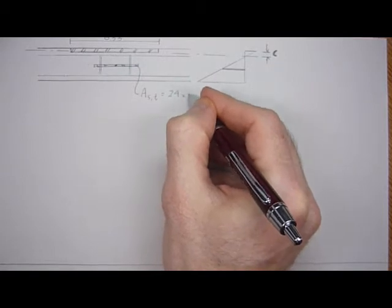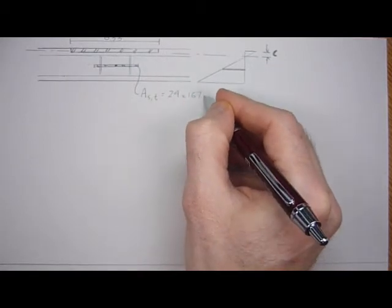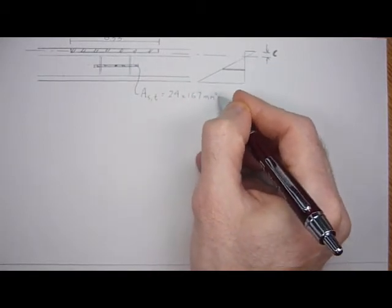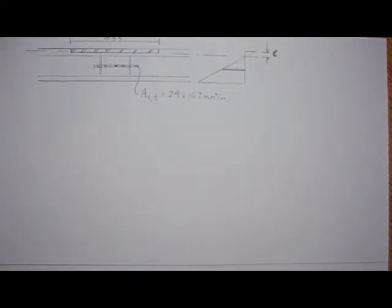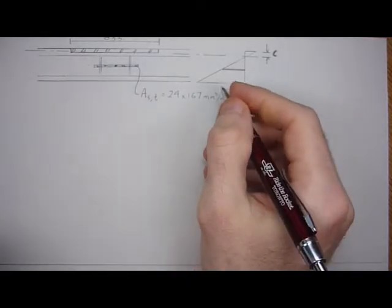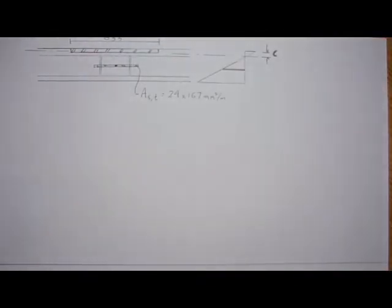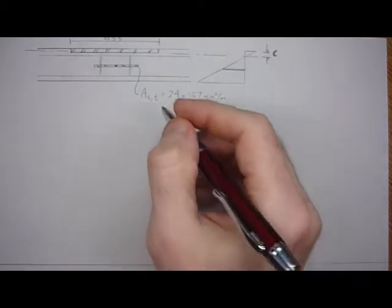24 times 167, that comes out to be 4,010 millimeters squared.